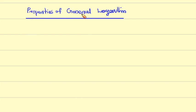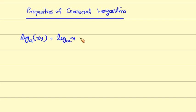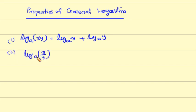Properties of General Logarithm. First property: log(xy) to the base a equals log x to the base a plus log y to the base a. Second property: log(x/y) to the base a equals log x to the base a minus log y to the base a.